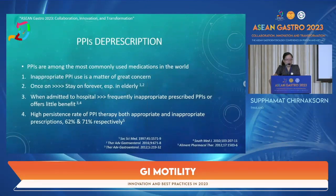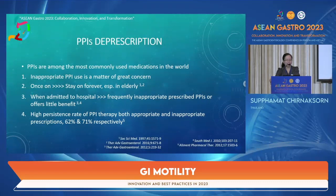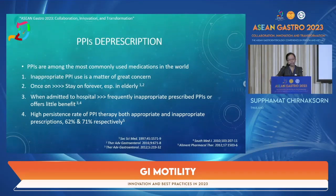The last topic is PPI prescription. PPIs are among the most commonly used medications in the world, including in Thailand. Inappropriate use is a major concern, especially in the elderly or when patients admitted to hospital are frequently prescribed PPIs inappropriately with little benefit. There is a high persistence rate of PPI therapy — 60% with inappropriate indication and 71% with inappropriate prescription. Patients currently on PPI therapy should be reviewed for whether they still have a valid indication.